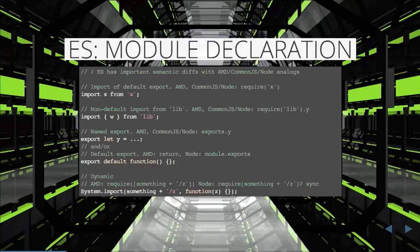You can get a reference to the module export, but the value of that can change over time and you don't have to get a new reference. This is really to help with cycle support — they have really good circular dependency support. I think that fixes one of the weaknesses of AMD, and it's also an improvement over CommonJS.